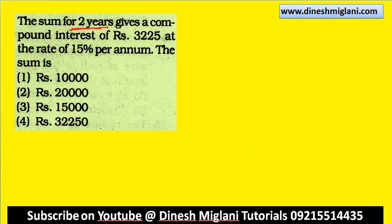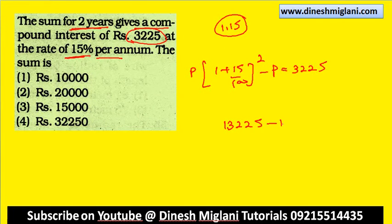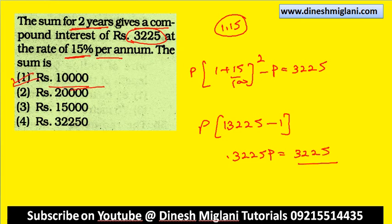A sum for 2 years gives a compound interest of 3225 at 15% rate of interest. We have to find the principal. P into (1 + 15 by 100) raised to power 2 minus P = 3225. We know 1.15 squared = 13225 by 10000. So P into (13225 by 10000 minus 1) = 3225, which gives P into 3225 by 10000 = 3225. Hence principal = 10,000. First one is my answer — principal is Rs. 10,000.